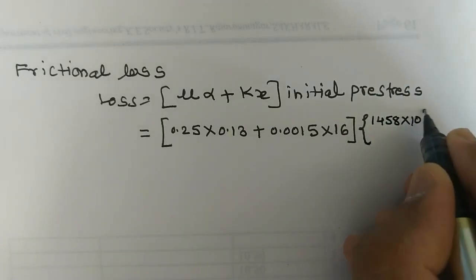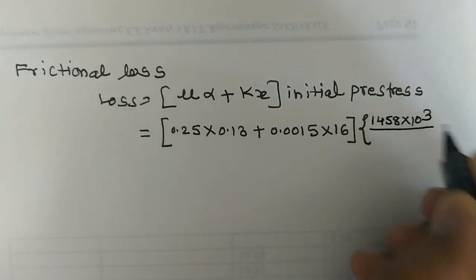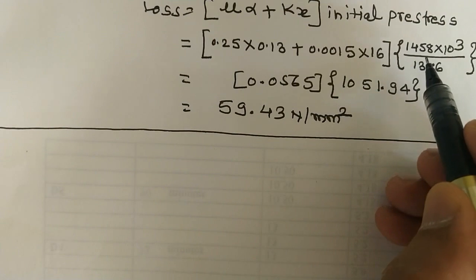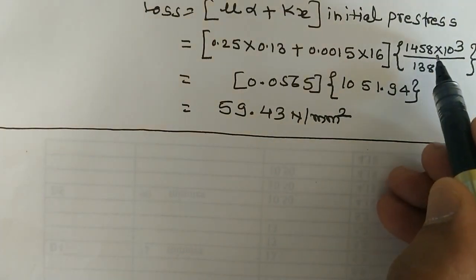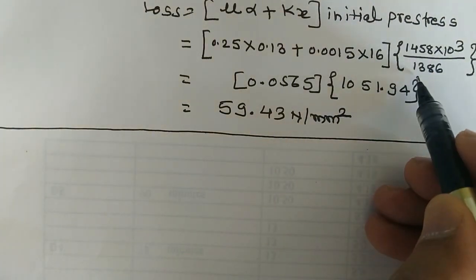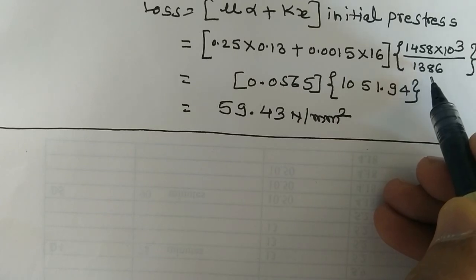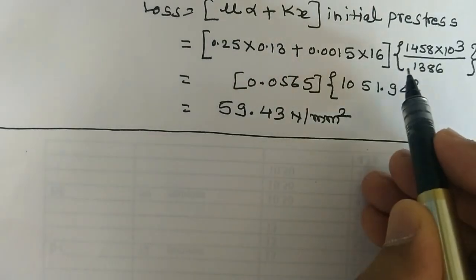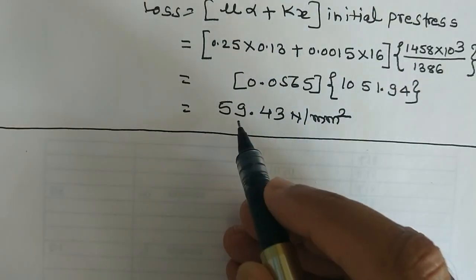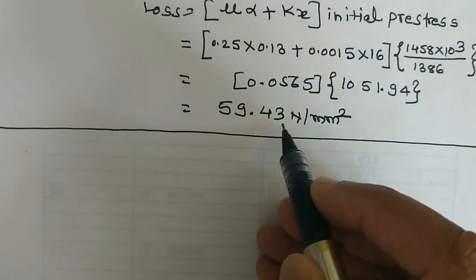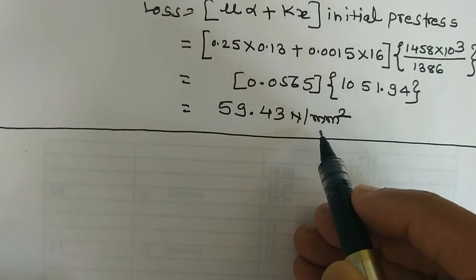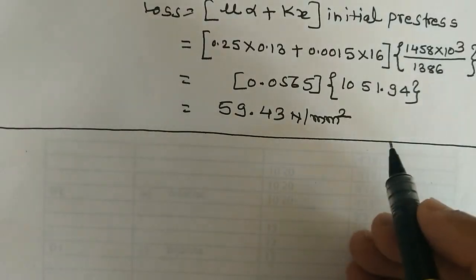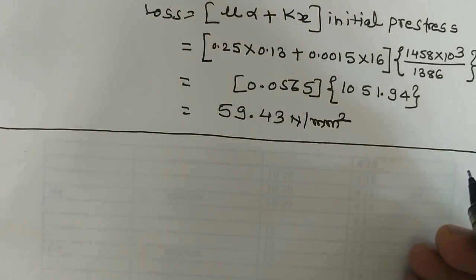Initial pre-stress = 1458 × 10³ / 1386 = 1052.0 N/mm². Frictional loss = (0.25 × 0.13 + 0.0015 × 16) × 1052.0 = 59.43 N/mm². This is the end of this problem.